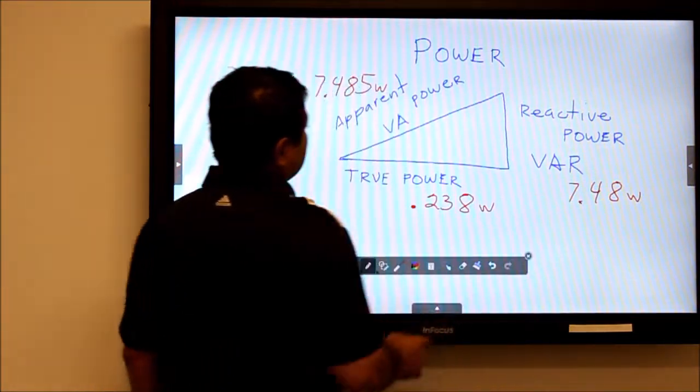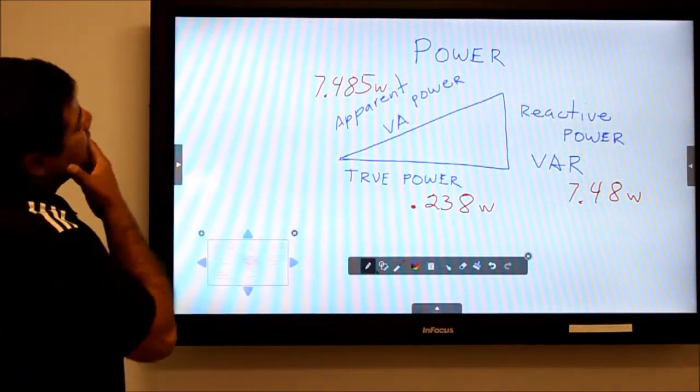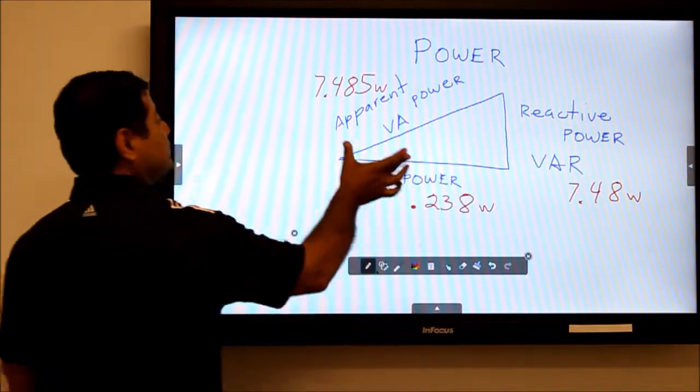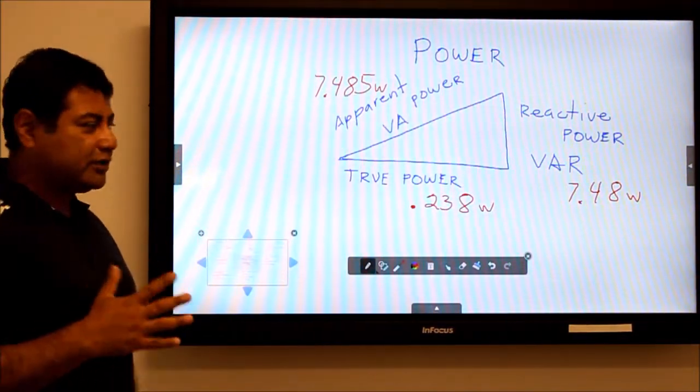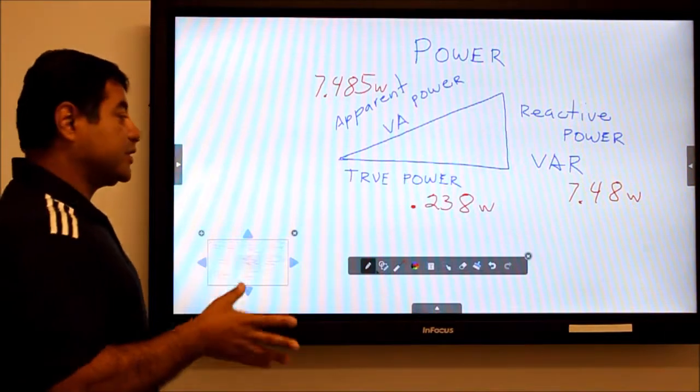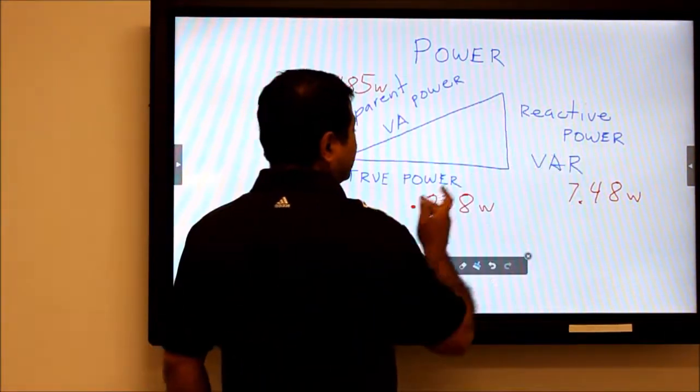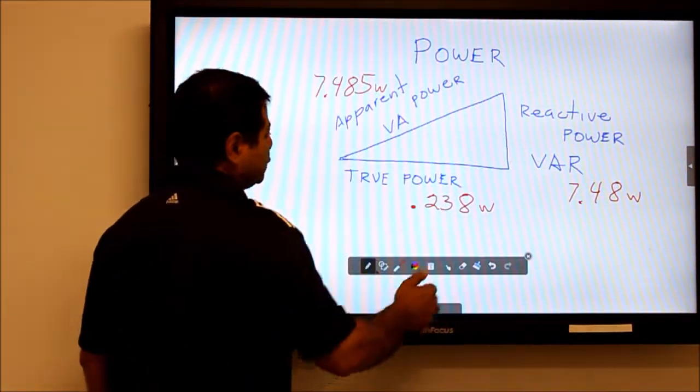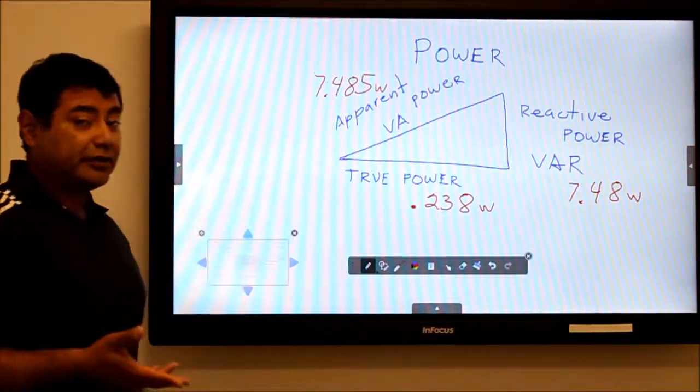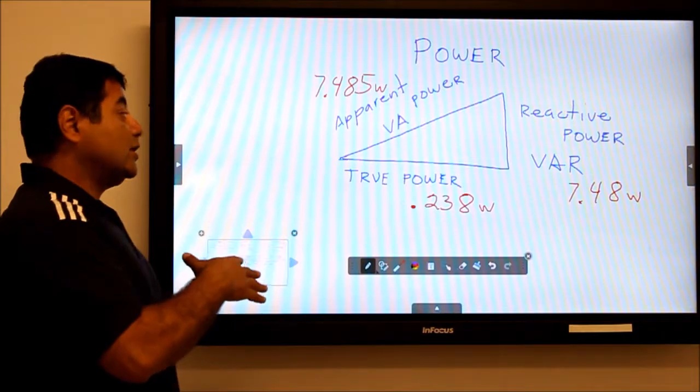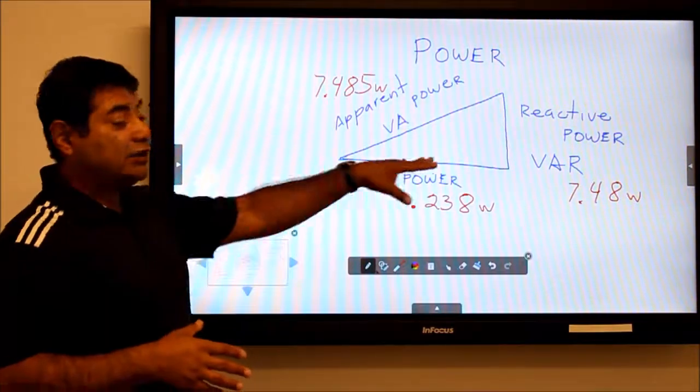One thing you'll notice is the reactive power is almost the same as my apparent power. That's kind of weird, right? Well, the only reason it's weird is because remember, these things do not add linearly. You're not doing 7.48 plus this - you add using the Pythagorean theorem, which we're going to show you next to check if your values are correct.